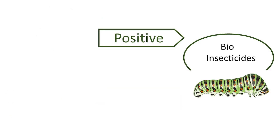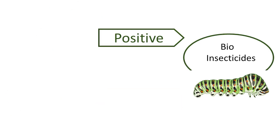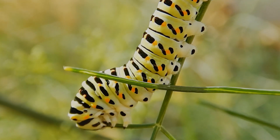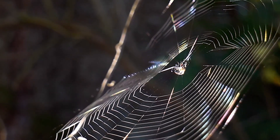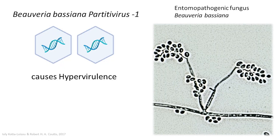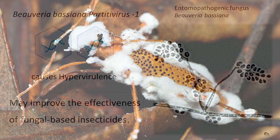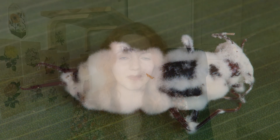Hypervirulence may have two sides. On the one hand, mycoviruses could be the key element of biological insecticides. For example, the entomopathogenic fungus Beauveria bassiana has a wide host range and is used as a biocontrol agent against insects and other arthropods. According to the literature, mycovirus Beauveria bassiana parasitivirus 1 may enhance the virulence of the fungal host. In this case, mycoviral infection improves the effectiveness of fungal-based insecticides and could provide better protection of crops in agriculture, and maybe in the future decrease the consumption of chemical insecticides.